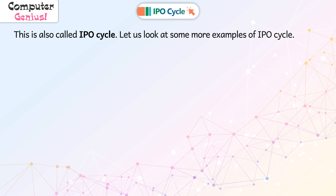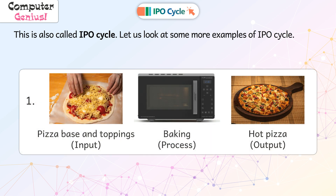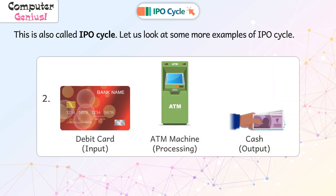Let us look at some more examples of IPO cycle. 1. Pizza base and toppings — input. Baking — process. Hot pizza — output. 2. Debit card — input. ATM machine — processing. Cash — output.